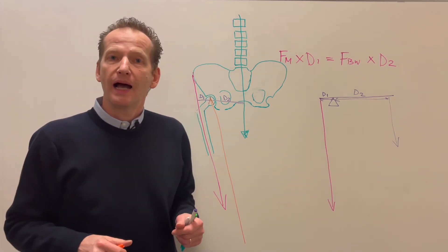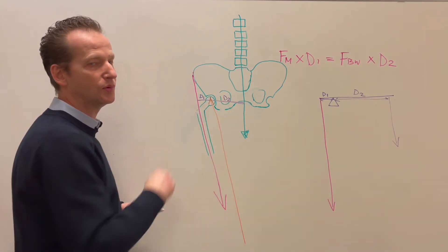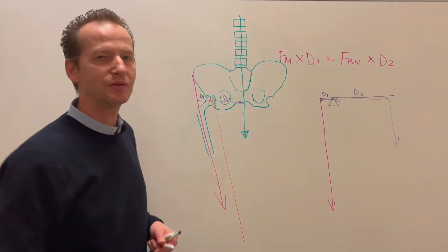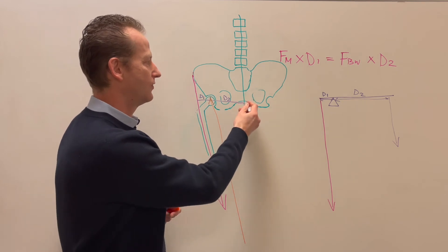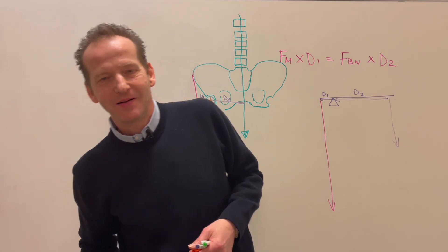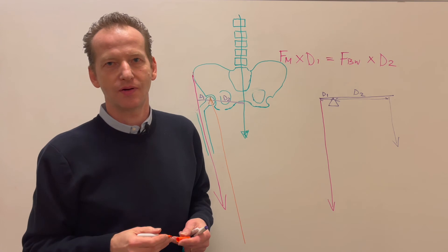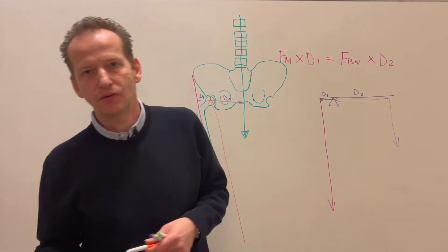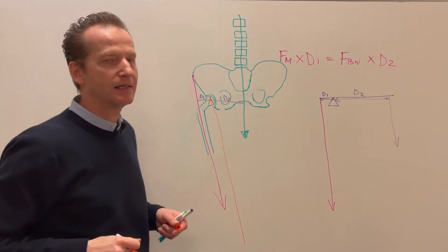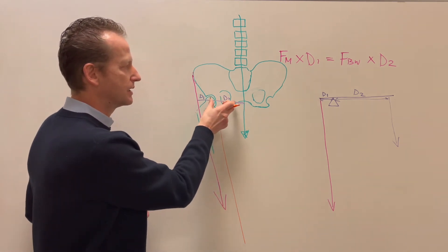Now, how can we counter it? We can counter it by reducing D2. How do you reduce distance of center of mass? By leaning, by dipping to the side. And that's why patients with osteoarthrosis spontaneously gravitate to waddling, to moving to the side, because in a brilliant way their brain is coping with the trouble by reducing D2.